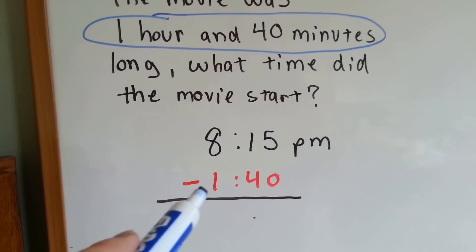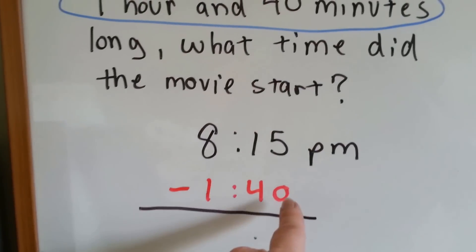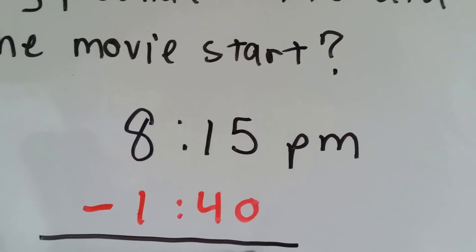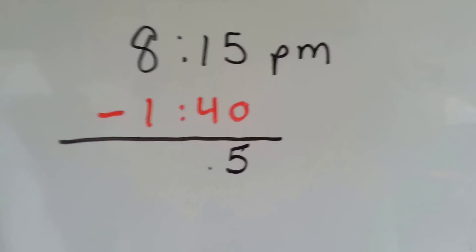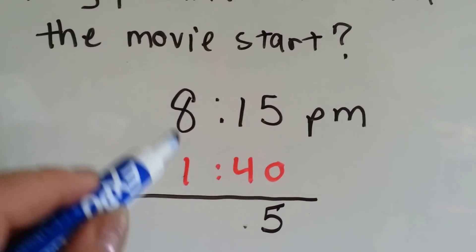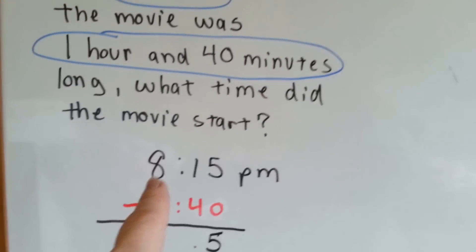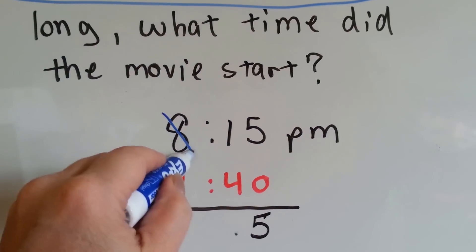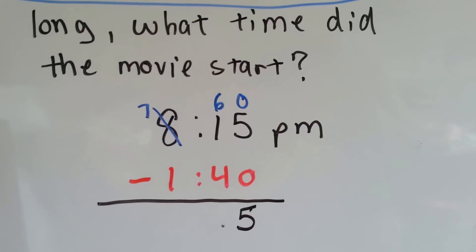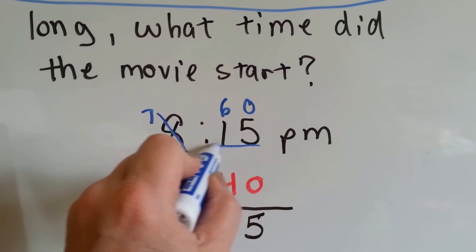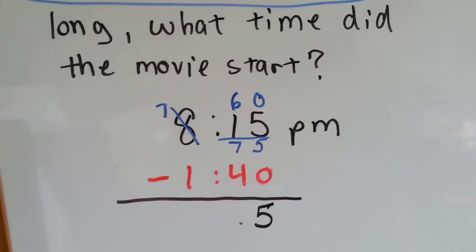So, 8:15 PM minus 1 hour and 40 minutes. 5 take away 0 is 5. But can you have 1 and take 4 away? No, you can't. So we're going to have to borrow from the 8. It's not like normal subtraction when you borrow a 10, because there are 60 minutes in each one of these 8 hours. So when we cross this off and it becomes a 7, we're going to give 60 to the minute side. And then we add these up and we get 15 minutes and 60 minutes, which is 75 minutes.